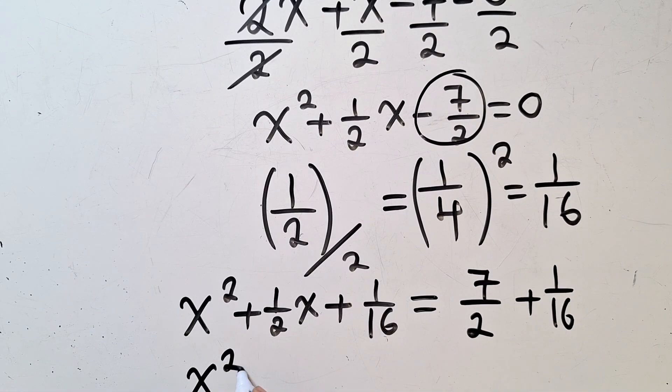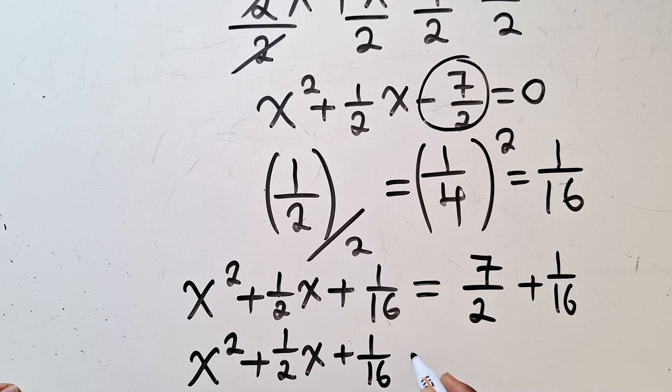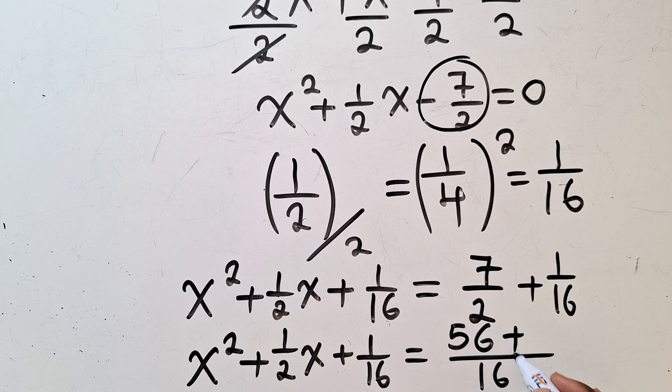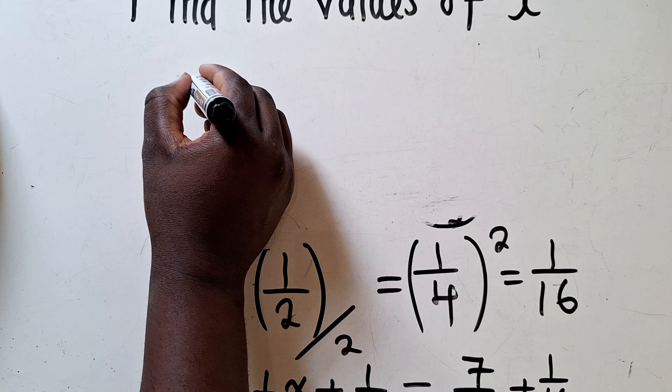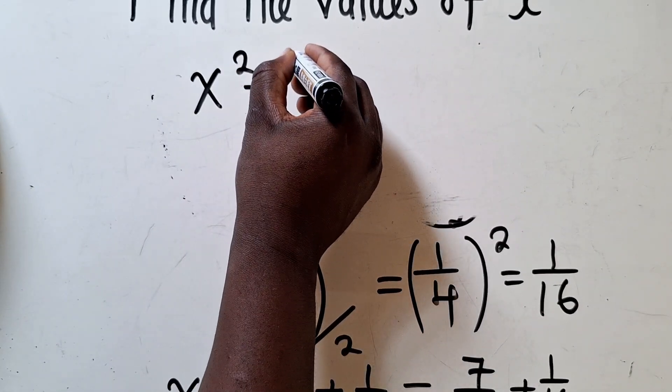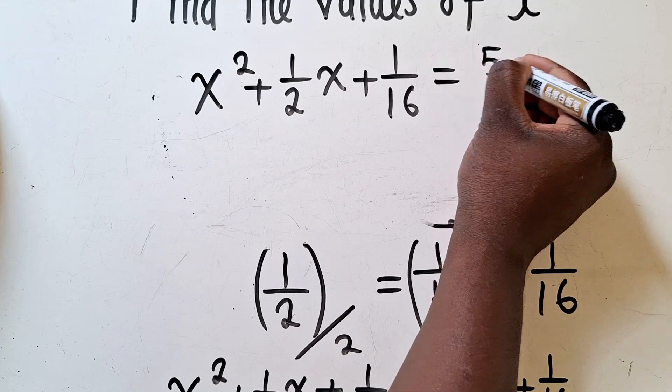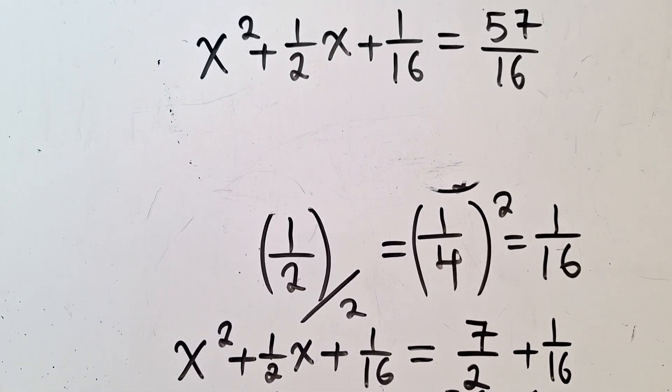And when you simplify here, you are getting x² plus 1 over 2x plus 1 over 16 is equal to... Lowest common denominator, it's 16. 2 into 16 is 8. 8 times 7 is 56 plus 1 here. 16 into 16 is 1. 1 times 1 is to give us 1. We've got x² plus 1 over 2x plus 1 over 16 is equal to 57 over 16. 56 plus 1 is 57. So 57 over 16.